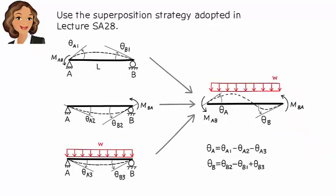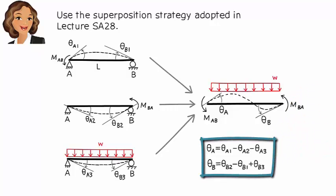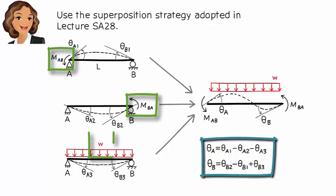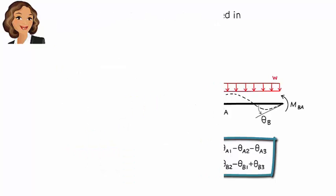As you will see in a minute, the right-hand side of these equations can be written in terms of M-A-B, M-B-A, and W. This means we can solve them for the end moments in terms of the end rotations and the load magnitude.